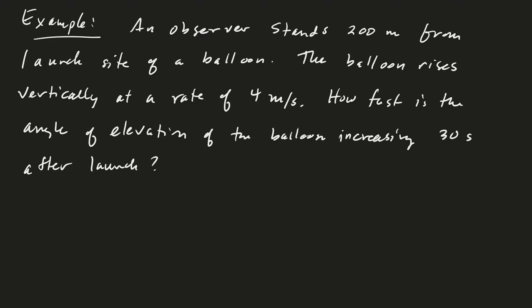This is the next example in our related rates problems. In this case we have an observer standing 200 meters from the launch site of a balloon. The balloon starts to rise vertically at a rate of rise of 4 meters per second, and you can assume that is constant.